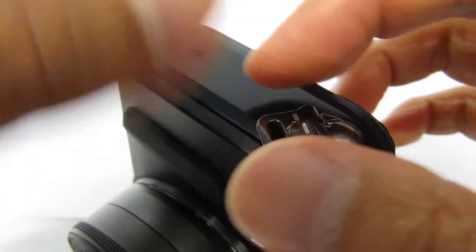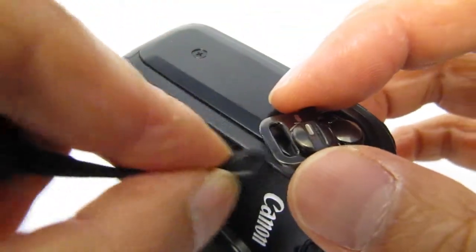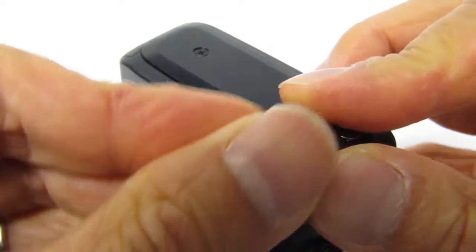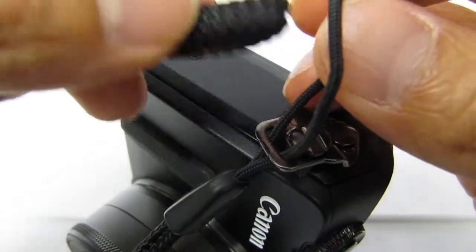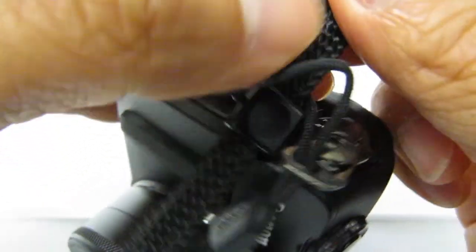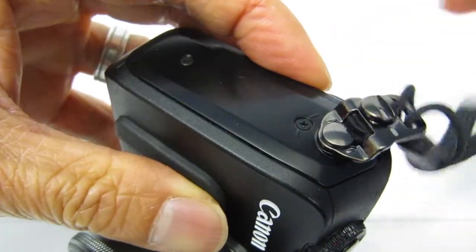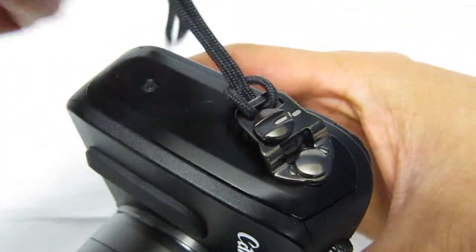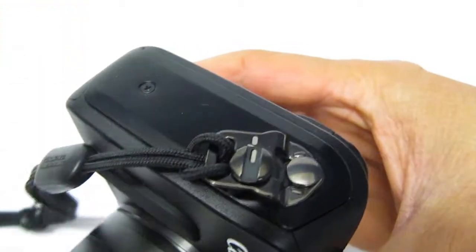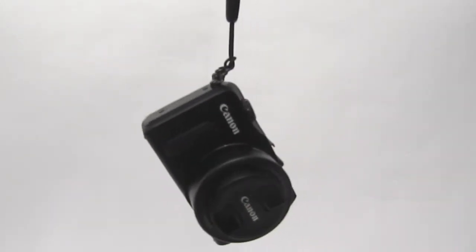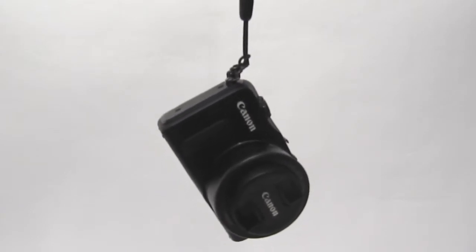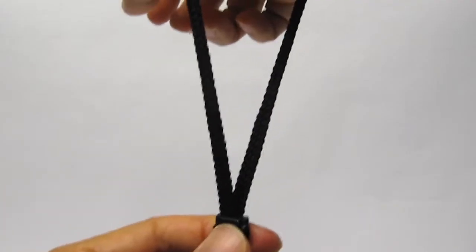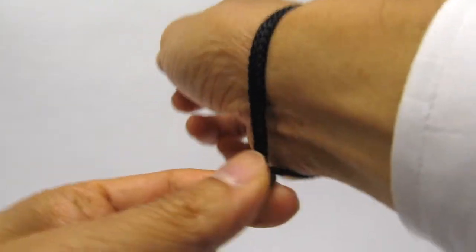So let's go ahead and put this on. Here's my EOS M dangling from the wrist strap I took from my Canon ELF APS camera. It feels pretty good. I feel pretty confident with this particular wrist strap. I really like that it has this little slider here that can tighten around your wrist.